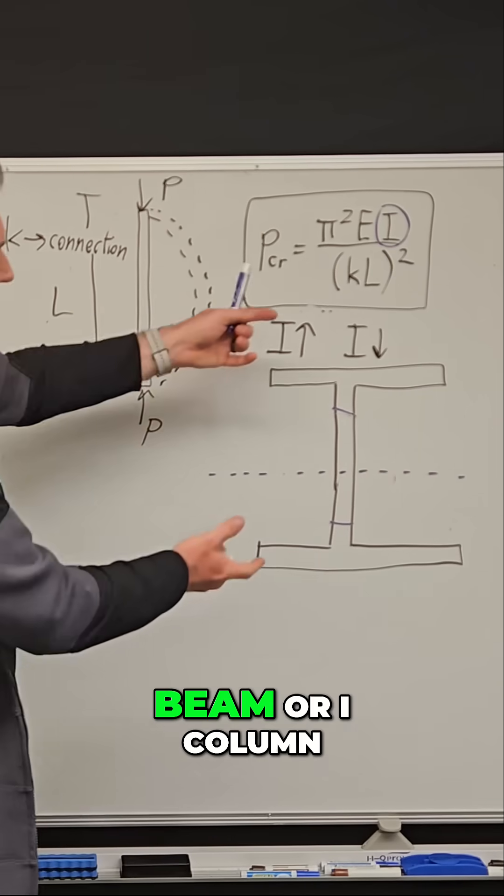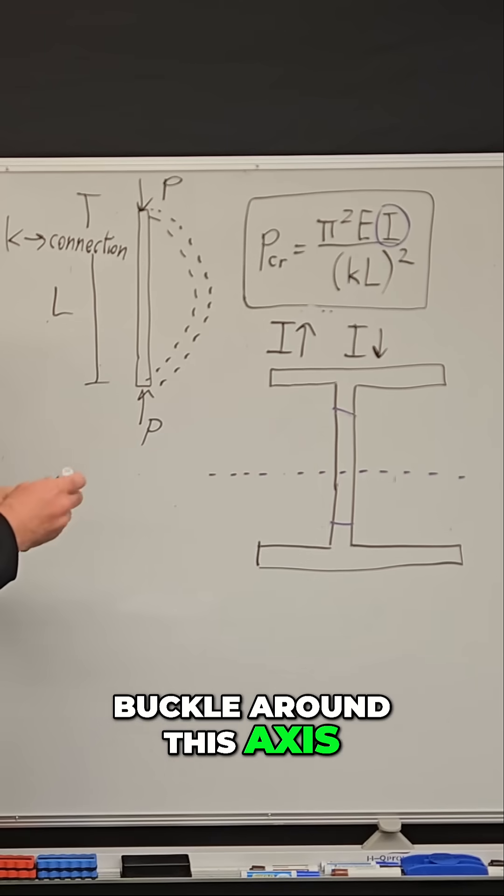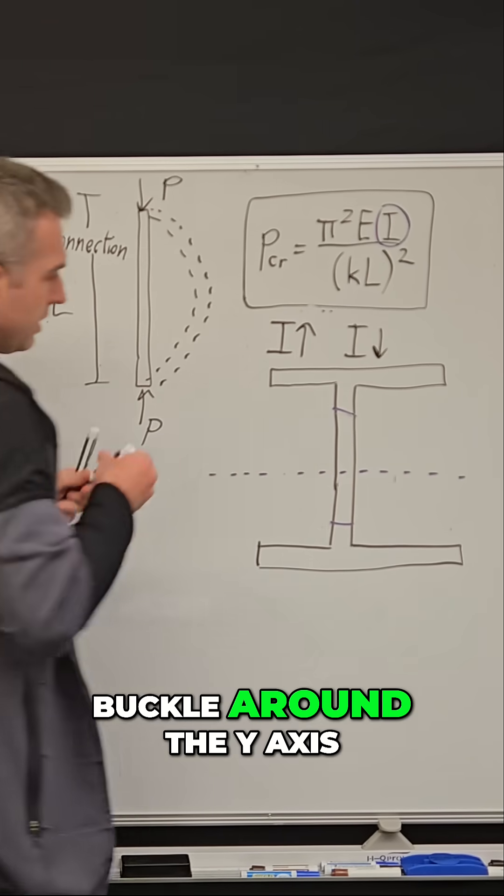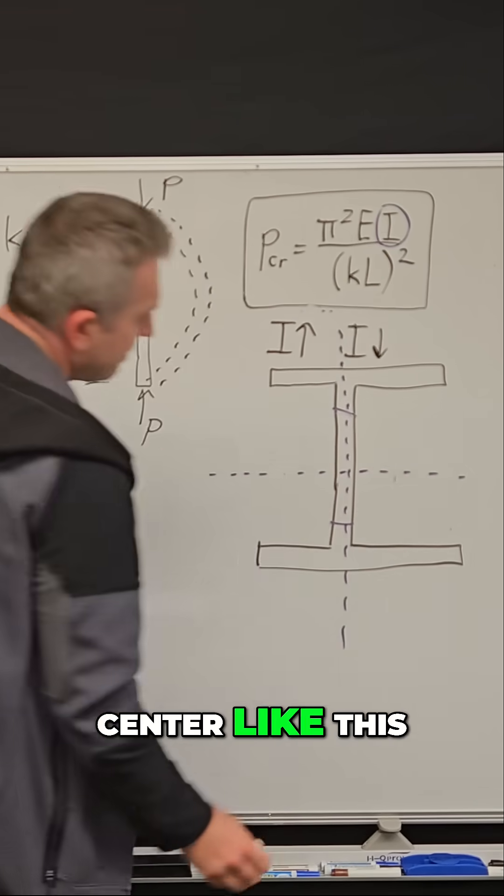So we know this I-beam or I-column could rotate or buckle around this axis, but it could also buckle around the Y-axis. There's another axis that goes right down the center like this.